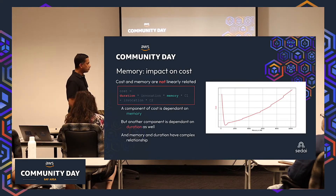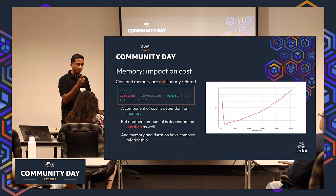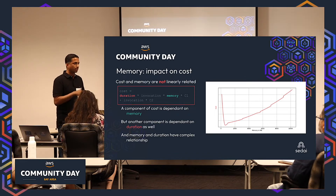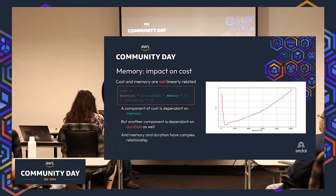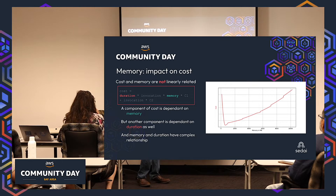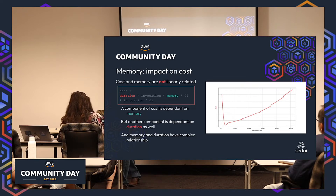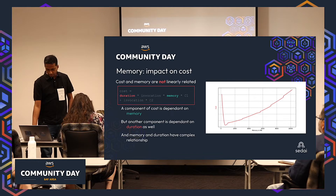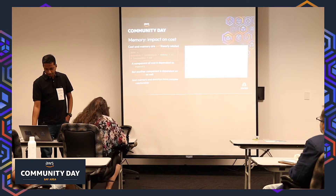Cloud providers price serverless by usage — you pay for the megabytes used for the time your function runs. If you increase memory a little and your execution time comes down, your cost also comes down. So when you're at the lowest memory and taking a lot of time, cost is high. When you increase memory and duration drops, cost decreases. Memory and cost have an important relationship.